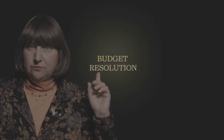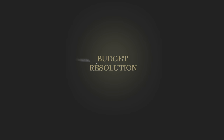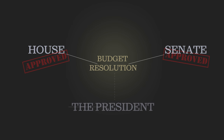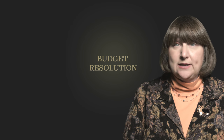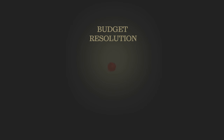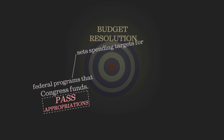Here's how reconciliation would work. First, Congress has to pass a budget resolution. That budget document has to be agreed on by the House and Senate, but it doesn't go to the President for his signature. The budget resolution does two main things. First, it sets spending targets for federal programs Congress funds every year. Those are known as appropriations.